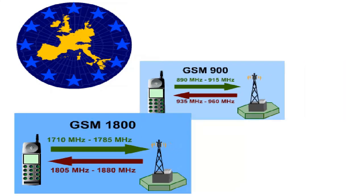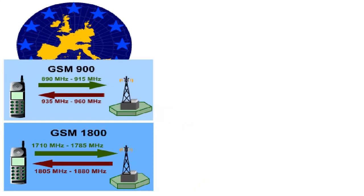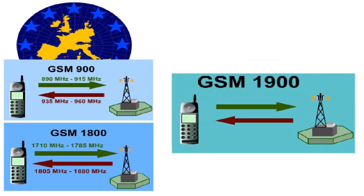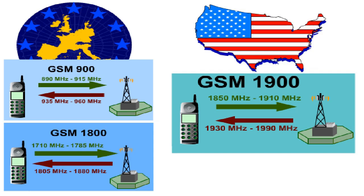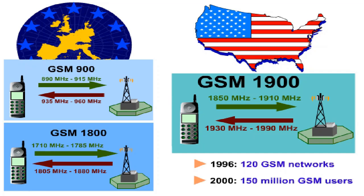In 1995, GSM 1900, with its own frequency range from 1850 to 1910 MHz in the uplink and 1930 to 1990 MHz in the downlink, was implemented in America. At the end of 1996, there were already 120 GSM networks in operation, and within the year 2000, there were already 150 million GSM users all over the world.